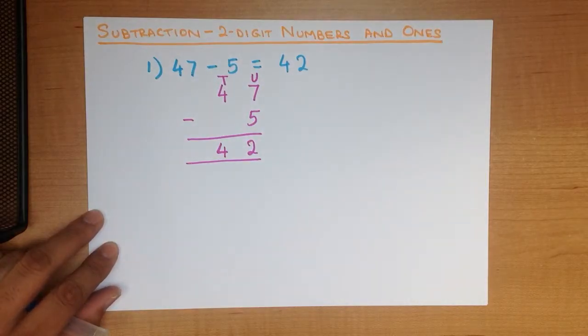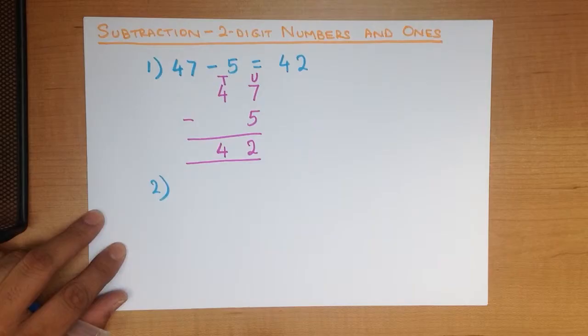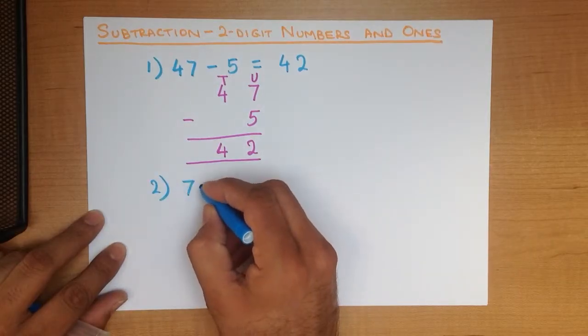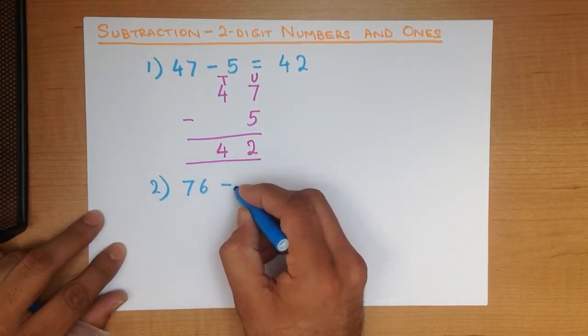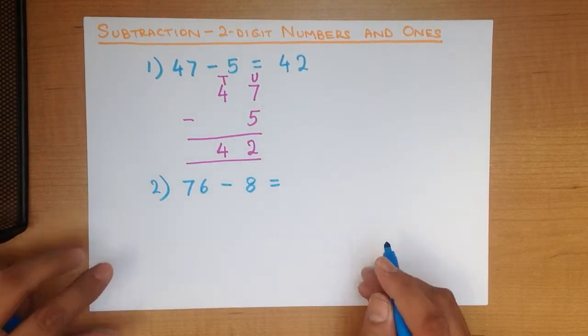Nice and easy. Let's do one more. What is 76 minus 8? 76 minus 8.